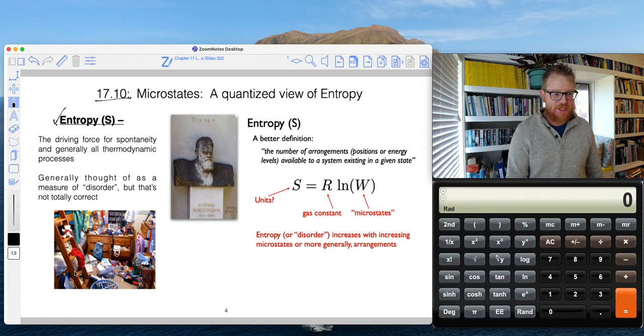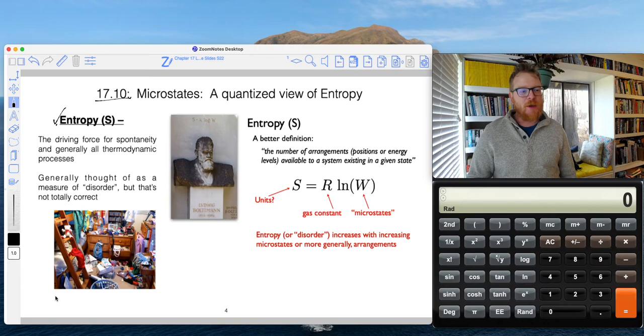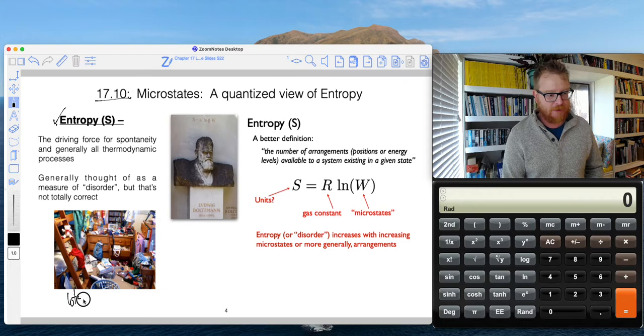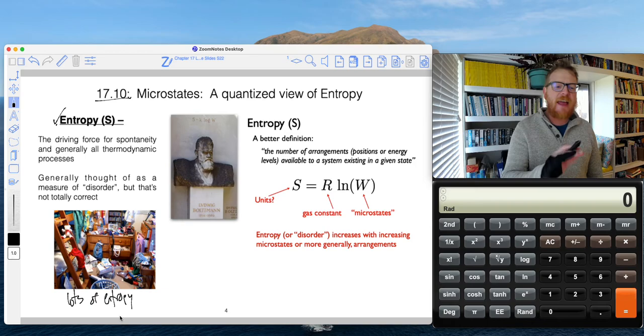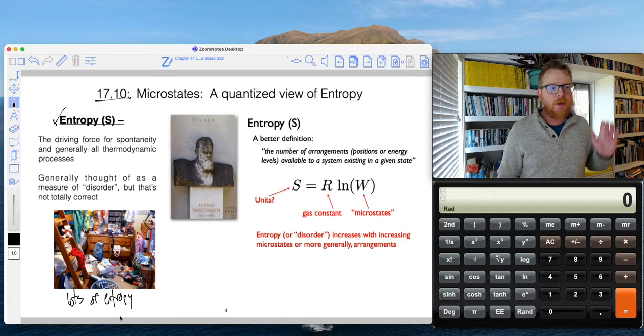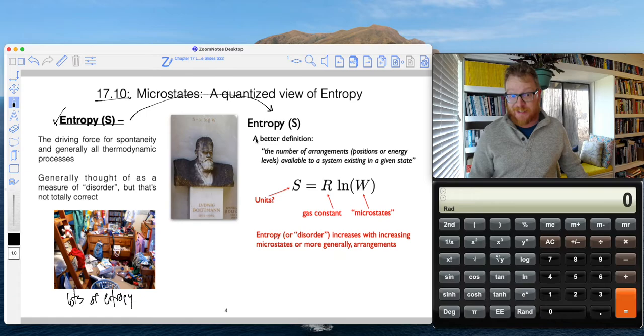All the same, the classic kind of view of entropy is you can imagine this messy college dorm room. We can think of it as having a lot of entropy, so lots of entropy, or in other words, there's lots of disorder going on in that messy college dorm room. That's an okay definition as we're kind of starting to understand entropy.